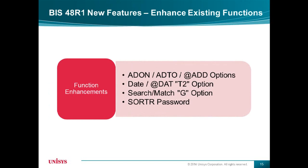For the add-on, add-to, and add functions, we've implemented new options that let you keep the issuing report headers, add a specific number of lines to the end of the report, or exclude a specific line type. For the date function, we've added the T2 option, allowing greater precision when converting a time to a floating point number. The G option for search and match lets you specify the line types to be included in the result — the opposite of the L option we've had for a long time. Previously, the sortR function did not ask for the right password prior to displaying the mask; this has been corrected.